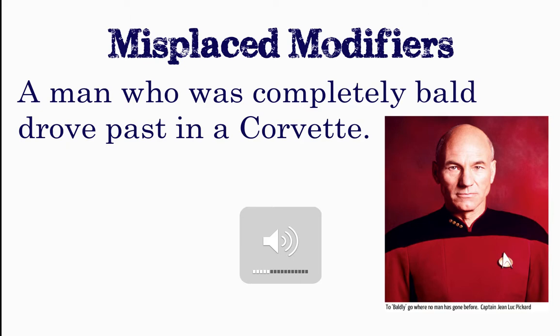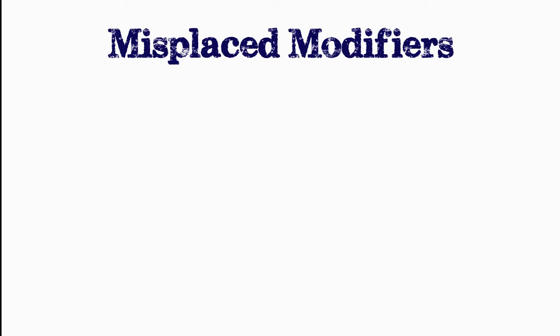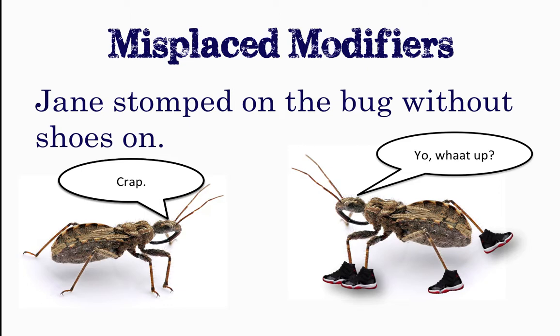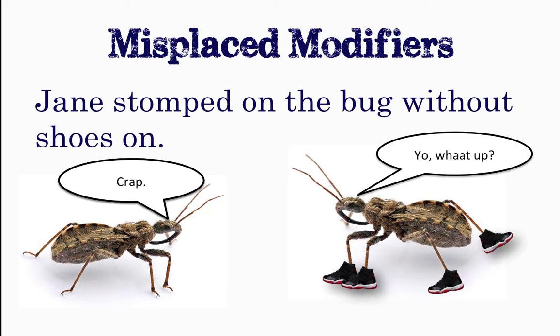Here's our correction. Now, here's our last example: 'Jane stomped on the bug without shoes on.' This implies that the bug was not wearing shoes. Bugs don't wear shoes, so we need to take our misplaced modifier and place it near the intended subject.